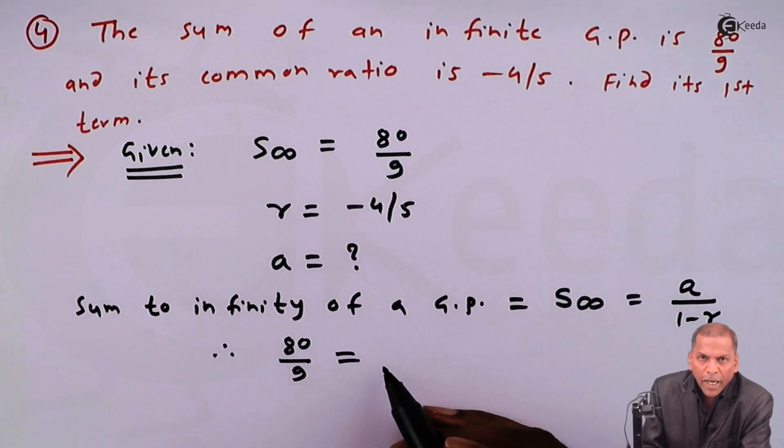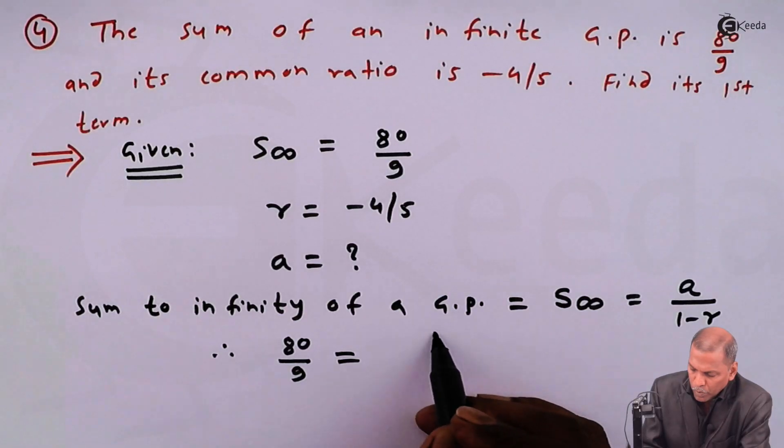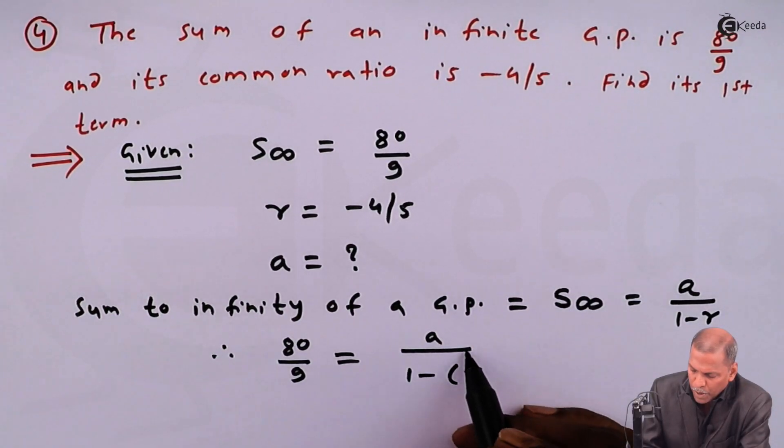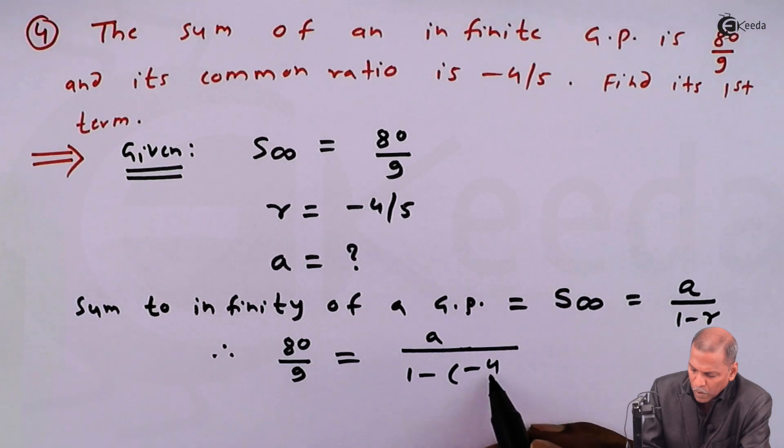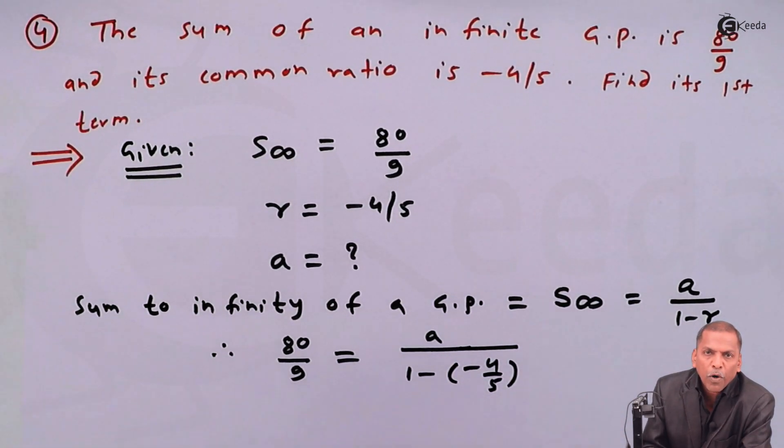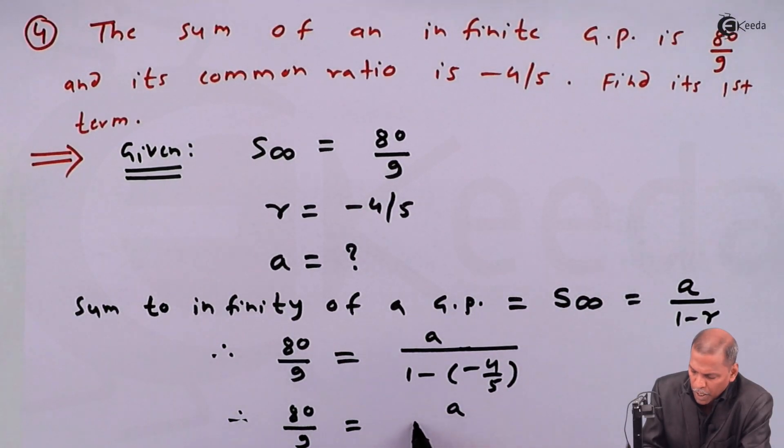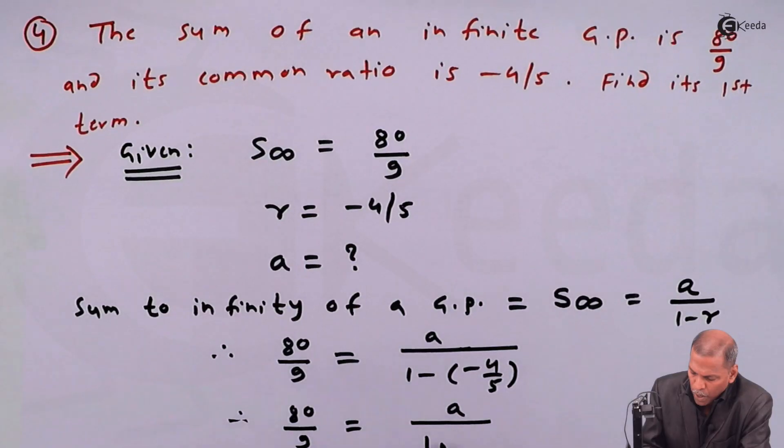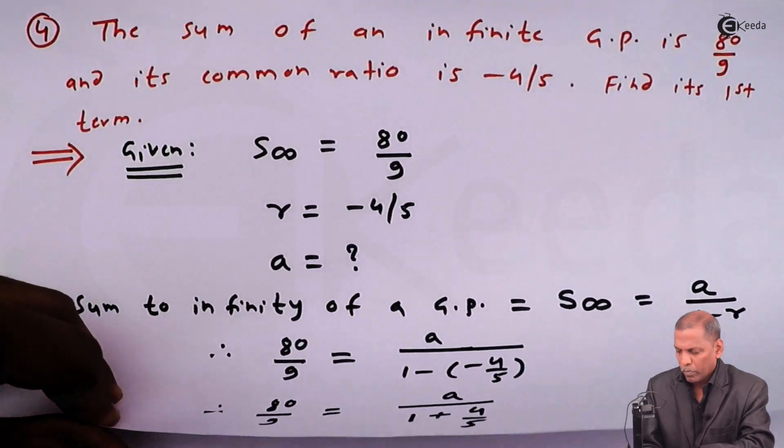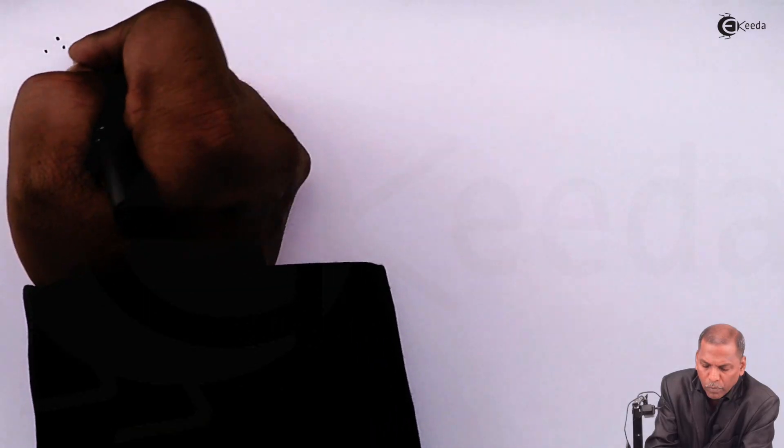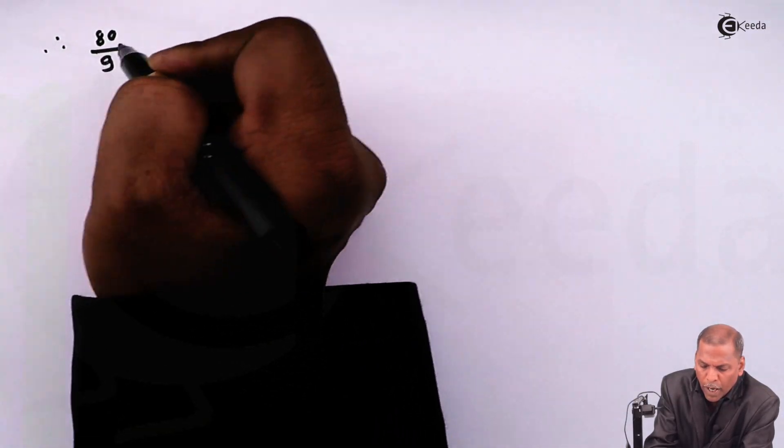80 upon 9 is equal to a upon 1 minus in bracket minus 4 upon 5. Therefore, the next step will be 80 upon 9 is equal to a upon 1 plus 4 upon 5.